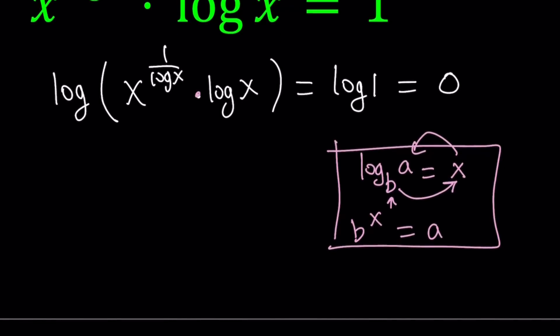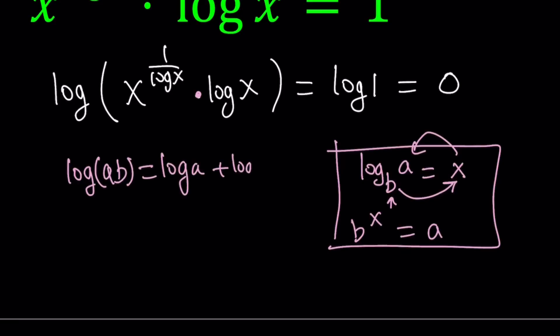We have a product here, so let's remember the product rule for logs, which can be proven using the definition. If you have something like log of a times b, you can write it as log a plus log b. Here I'm using base 10 all the time — since it's not written, it's base 10. But this is true for any base.